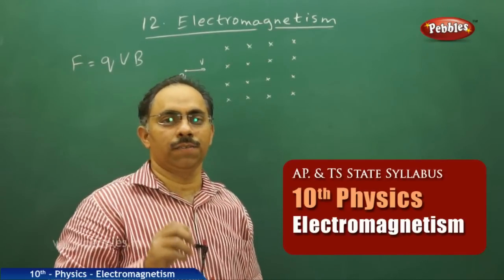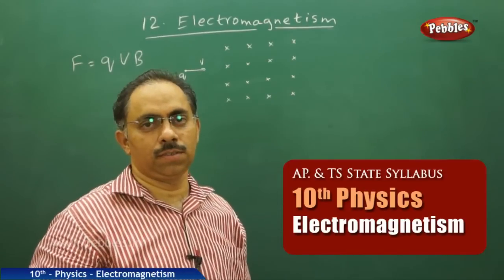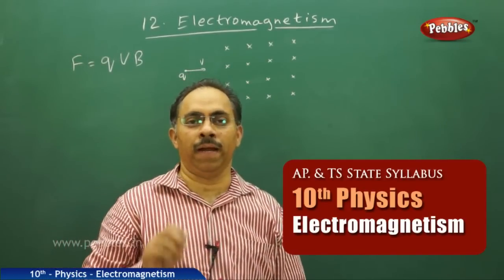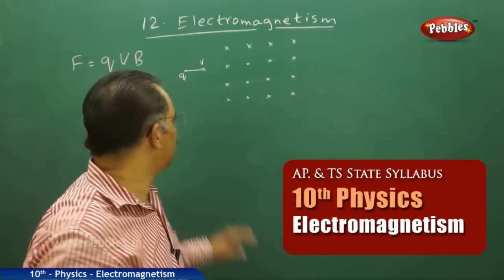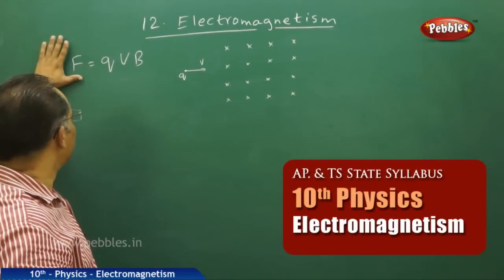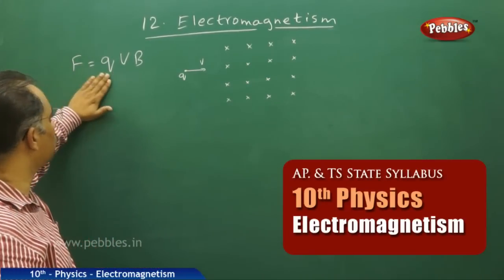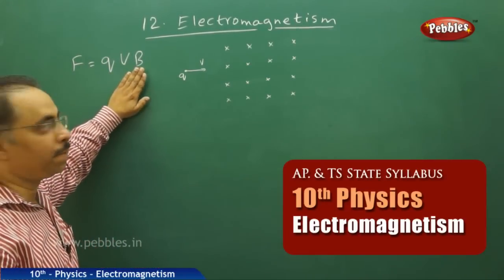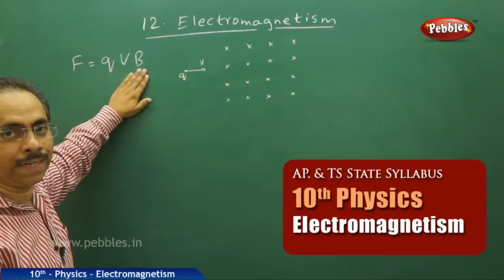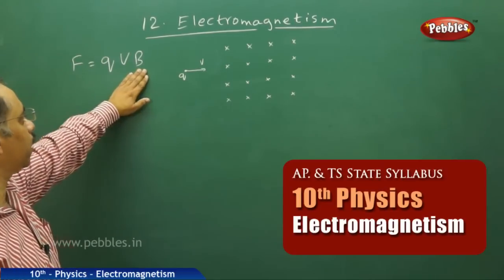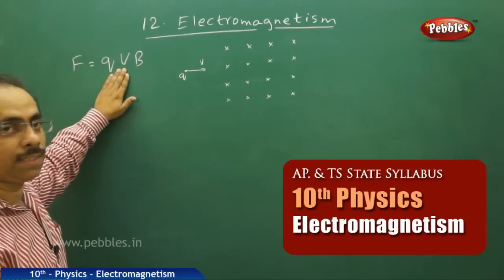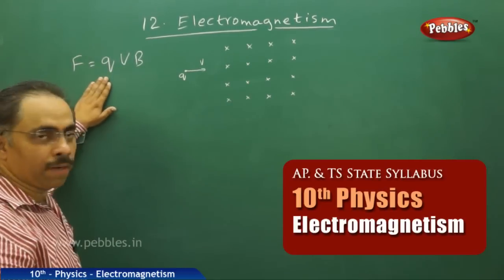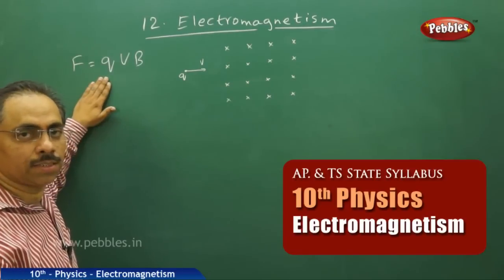To know the magnitude of the force on a charge moving in a magnetic field, the expression we have is F = Q × V × B. B is the magnetic field strength or magnetic induction field, V is the velocity of the charged particle, and Q is the magnitude of the charge.